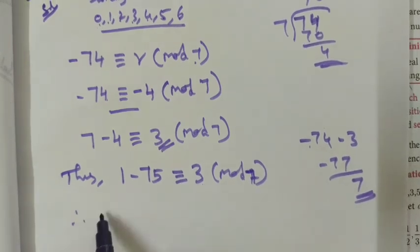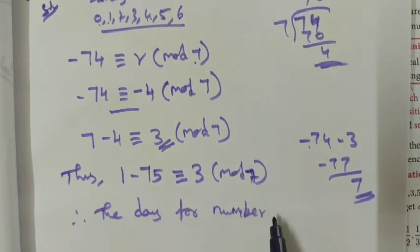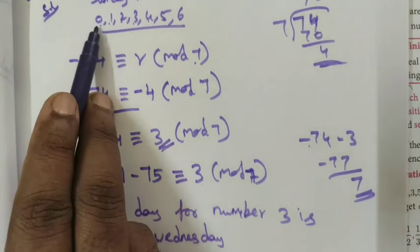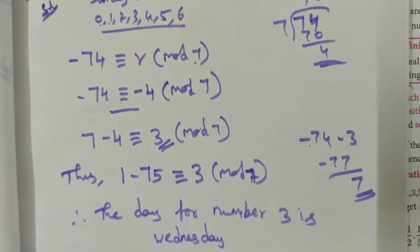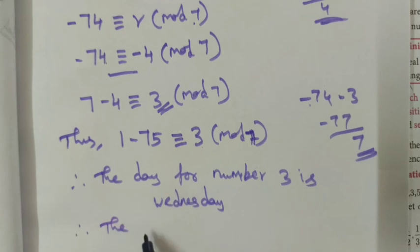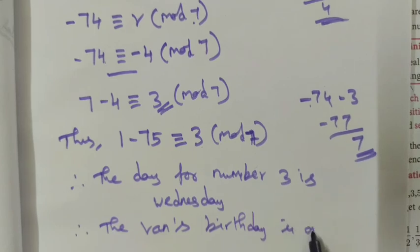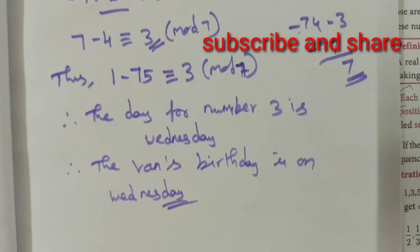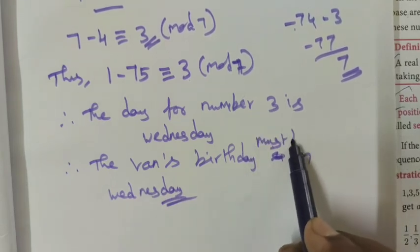The remainder is 3. The day for number 3 is Wednesday. Sunday is 0, Monday is 1, Tuesday is 2, Wednesday is 3. So the third day is Wednesday. Therefore Vani's birthday is on Wednesday.